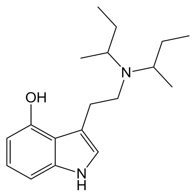However, it has subsequently been tested in vitro, and unlike the N-butyl and isobutyl isomers which are much weaker, the S-butyl derivative retains reasonable potency, with a similar 5-HT2A receptor affinity to MIPT but better selectivity over the 5-HT1A and 5-HT2B subtypes.